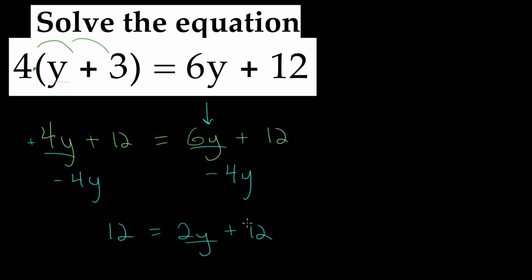To get y by itself, we need to isolate the variable term. We need to cancel out this plus 12, which we can do by subtracting 12 on each side. On the left-hand side, we get 0. On the right-hand side, we have 2y plus 12 minus 12, which is also 0.